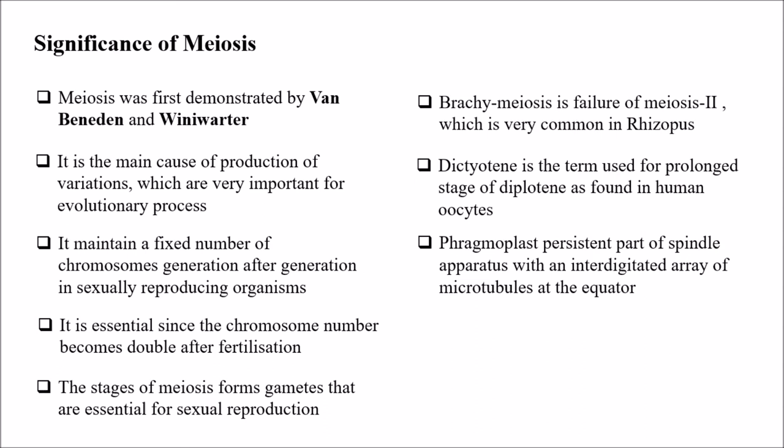Fragmoplast is the persistent part of the spindle apparatus with an interdigitated array of microtubules at the equator. These are about the significance of meiosis and some failures or limitations of meiosis.